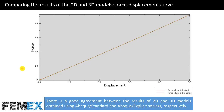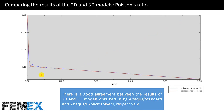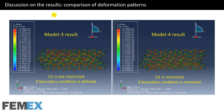Here I have compared the force displacement curves of the 2D and 3D models. As you can see, there is a good agreement between the results of the 2D and 3D models obtained using Abaqus Standard and Abaqus Explicit solvers respectively. Also, this is the comparison of the Poisson's ratio, and here we also have good agreement between the 2D and 3D results.